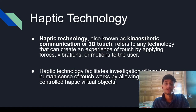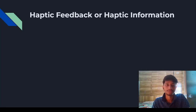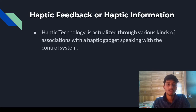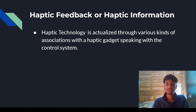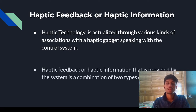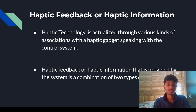Now we will see haptic feedback or haptic information. Haptic technology is actualized through various kinds of associations with a haptic device speaking with the control system. The haptic feedback or haptic information provided by the system is a combination of two types of information: first is tactile feedback, and second is kinesthetic feedback.